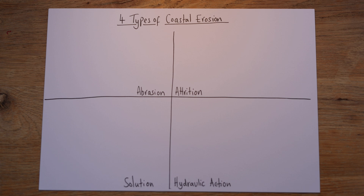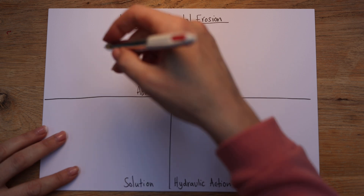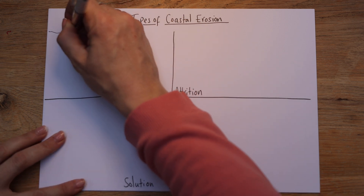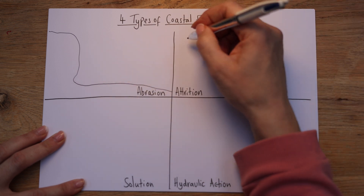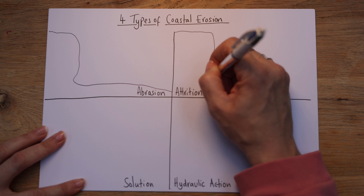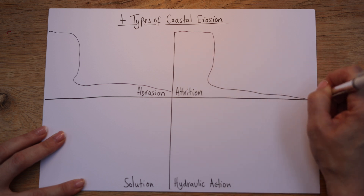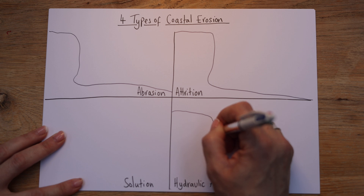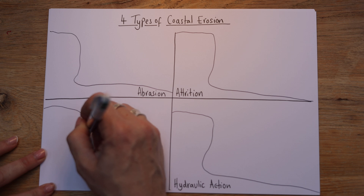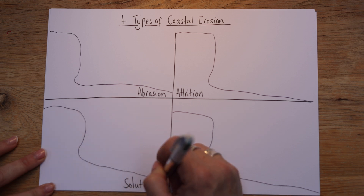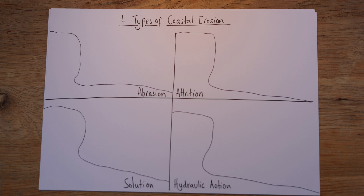Now we're going to draw — I'm going to change pens for this — we're going to draw a cliff basically in all of them. It doesn't have to be perfect at all. We want a little bit of cliff and then a sort of sloping beach in all of them. If you have another colour, a blue would be awesome for the waves, but really don't worry if you haven't.